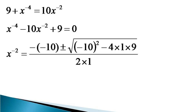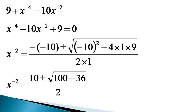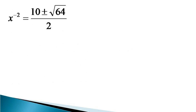This simplifies to x raised to the power minus 2 equals 10 plus or minus under root of 100 minus 36, divided by 2. This further simplifies to x raised to the power minus 2 equals 10 plus or minus root 64 by 2, which becomes 10 plus or minus 8 by 2.